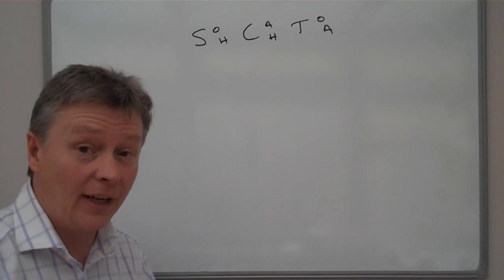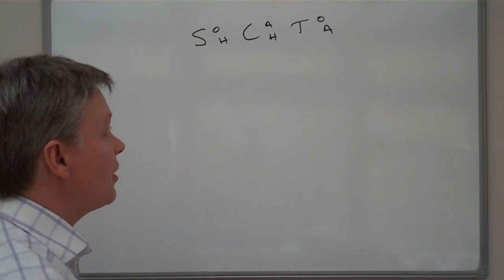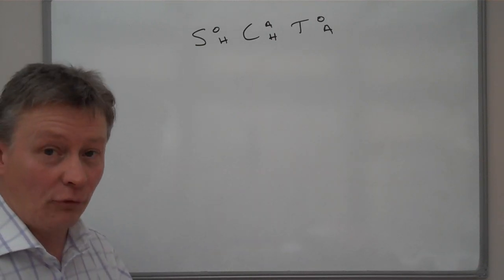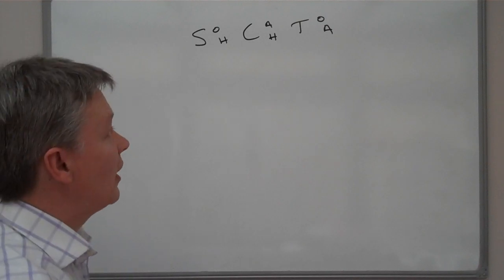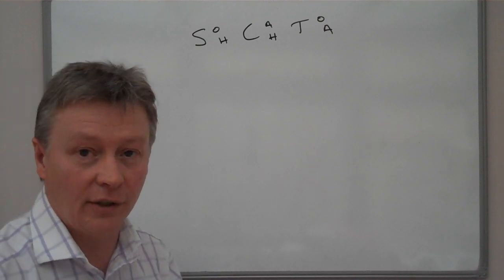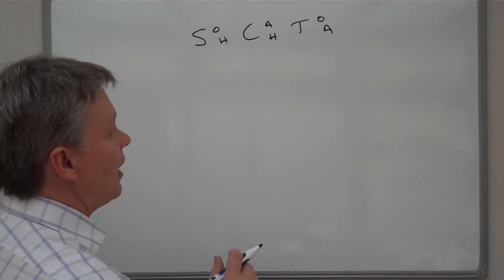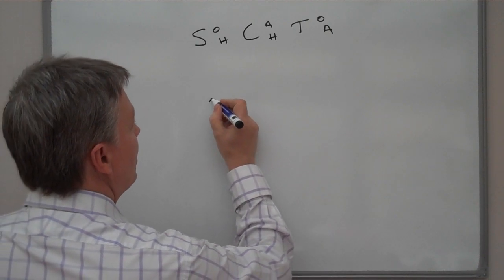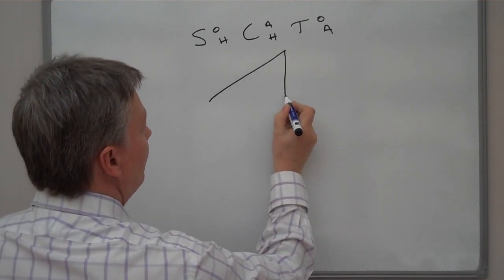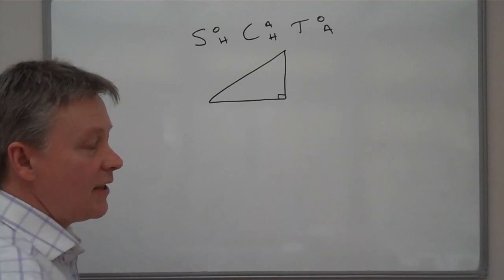This relates to the relationship with different sides and angles of right angle triangles. What I'm going to do first is put a right angle triangle up on the board, and then we'll look at the way in which we can label the right angle triangle so we can look at the different relationships.